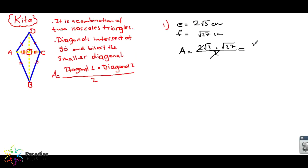I know that √27 is equal to 3√3. So 2√3 times 3√3 divided by 2 - 3 times √3 times √3 is 9, that makes 9 cm squared. That's the answer. Let's look at the second example.